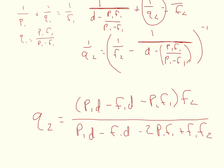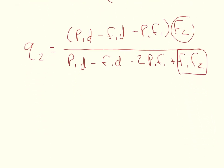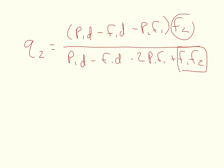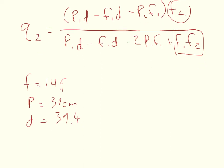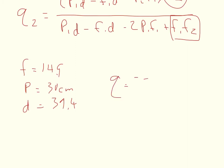This can be simplified further since F1 and F2 are the same value, but this form is sufficient to plug into a calculator. For our values: F = 14.9 cm, P = 30 cm, D = 39.4 cm. Plugging and chugging, we get Q2 equal to negative 28.6088 cm.